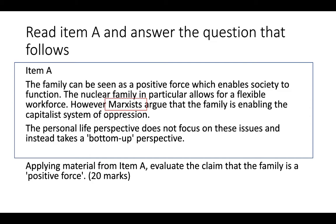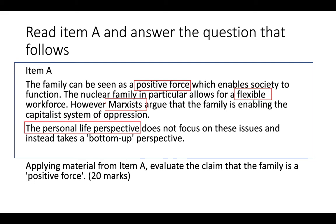If the question is 'evaluate the claim that the family is a positive force', because they've given us the word Marxist we know we can dive into the negatives Marxists outline — that's our first hook, a freebie. 'Positive force' is used in the question — you need to quote it and write about it specifically. This is the functionalist perspective: Parsons, Murdoch — that's our second hook. 'A flexible workforce' is specifically Parsons again, directing you to another PEEL paragraph. And there's actually a fourth hook: 'the personal life perspective', meaning you can talk about viewing the family from the bottom up rather than the top down.